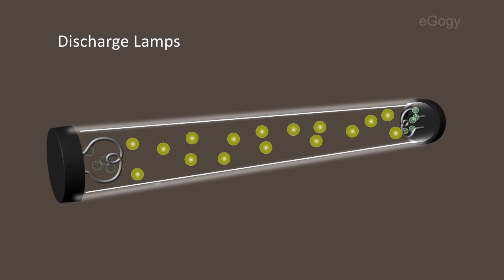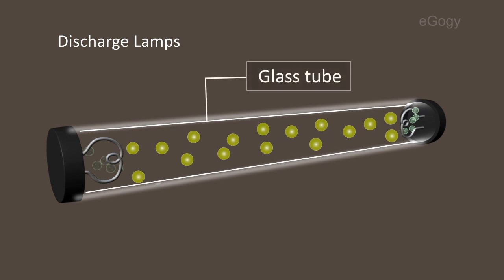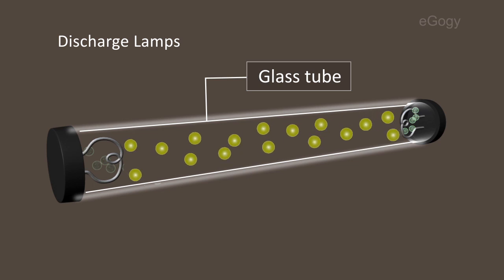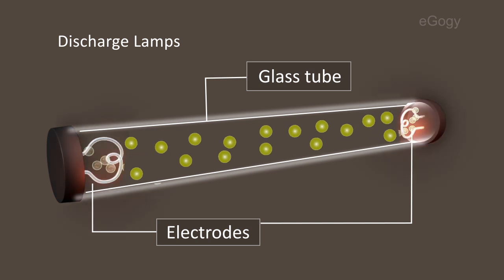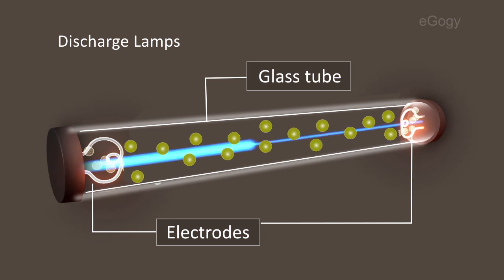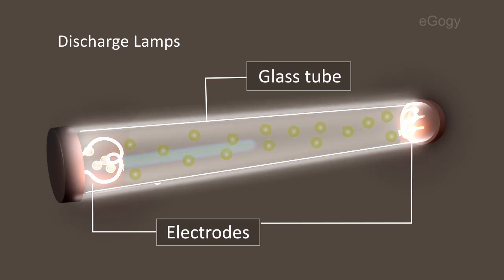The important part of a discharge tube is a glass tube containing suitable gas at low pressure. The bulb consists of two electrodes at each end. A high voltage is applied to the electrodes, and the gas inside the tube gets ionized. As a result of the collision of the ions and the electrons with unionized particles, light is produced.